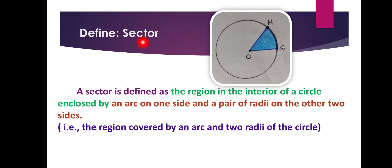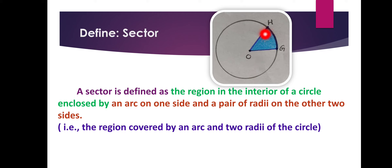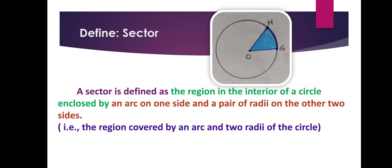Sector. What is a sector? A sector is defined as the region in the interior of a circle that is enclosed by an arc on one side and a pair of radii on the other two sides. We have arc GH on one side and two radii: OG and OH. The region colored in blue is the sector. The region covered by an arc and two radii of the circle is the sector.